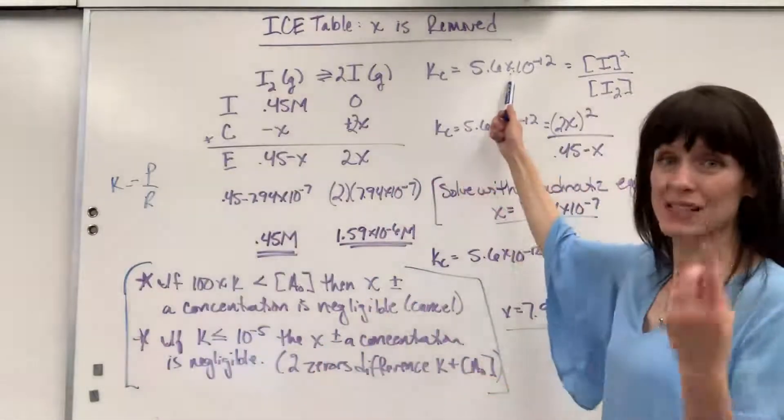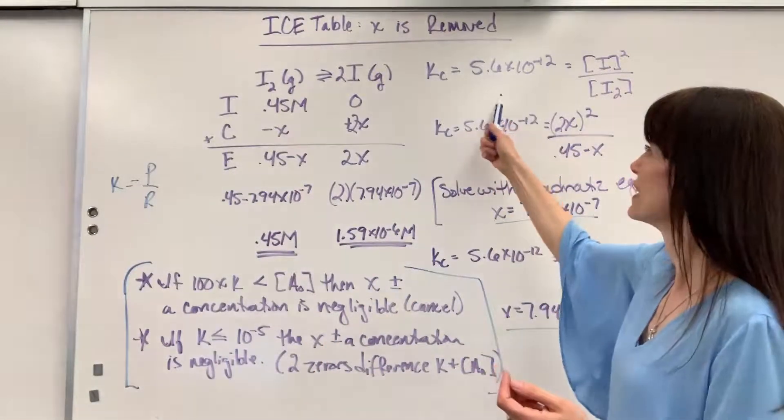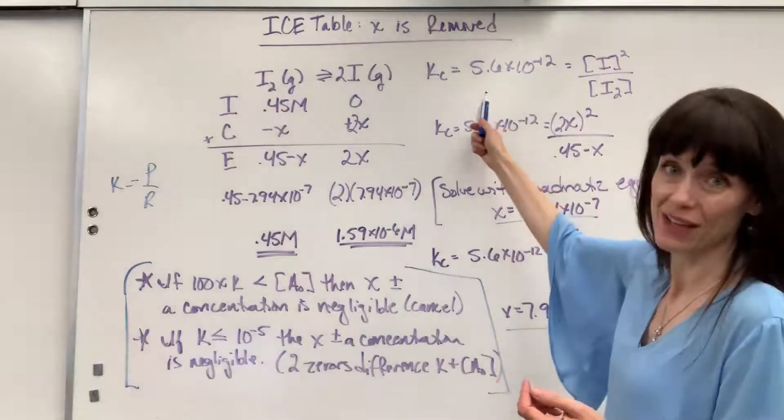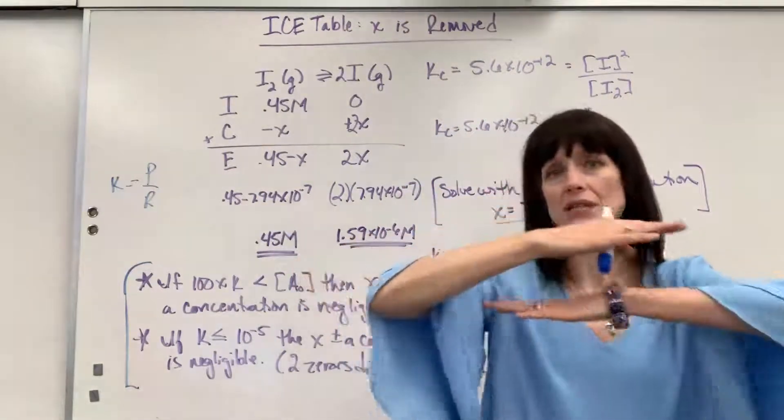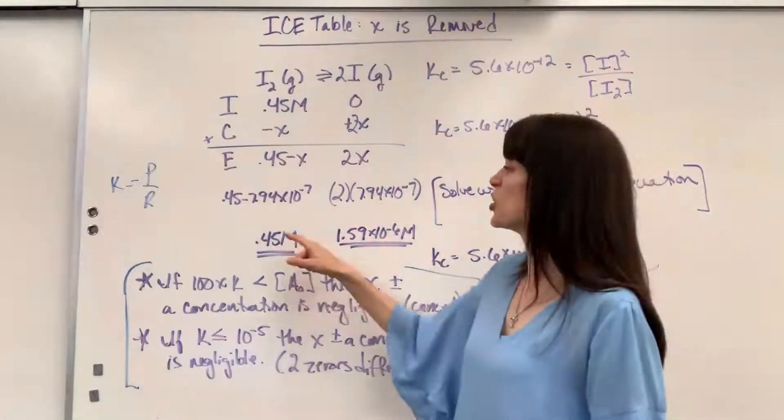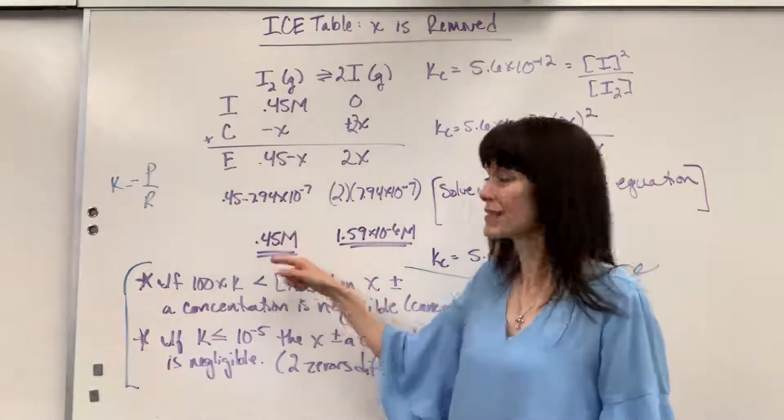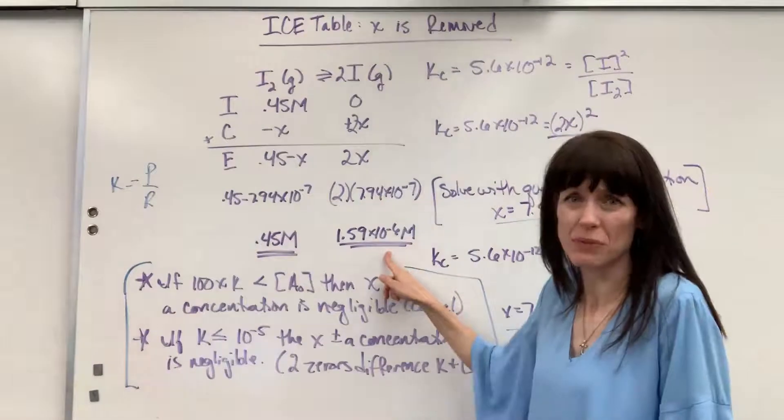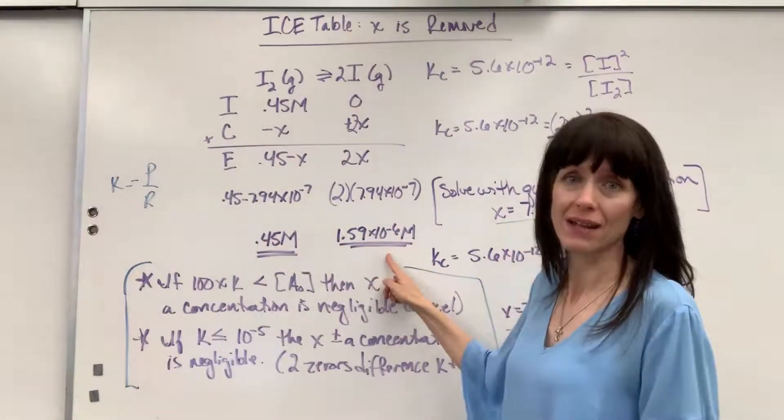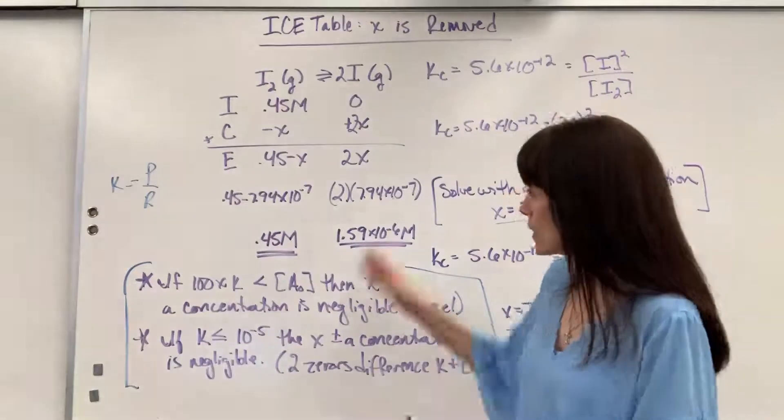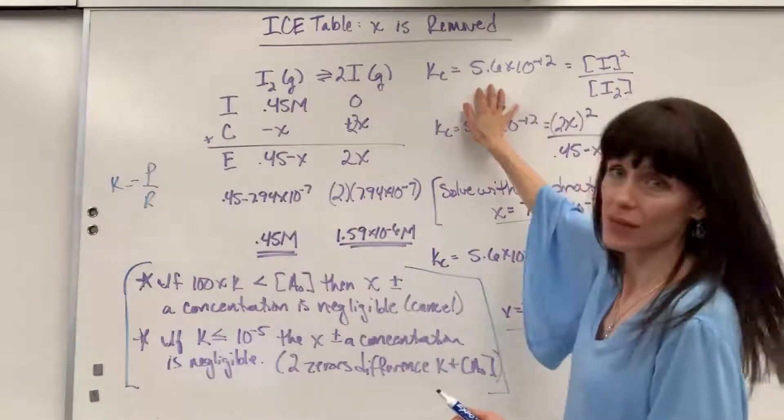When I have a number less than 1, that means that it is very reactant favored, okay? And check it out, it is. When we hit those equal rates, I have a huge amount of reactant compared to a tiny amount of product. This barely reacts. It hardly makes any product at all. So these numbers totally fit with this.